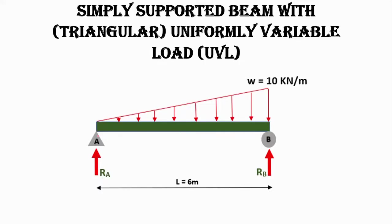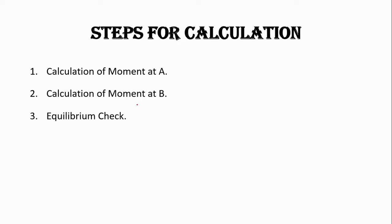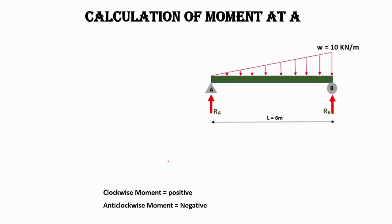Here you can see we have a beam AB of 6 meter length and 10 kilonewton per meter UVL acting on it. First we will calculate the moment at point A, then moment at point B, then perform the equilibrium check, and at the end we will draw the free body diagram, shear force diagram, and bending moment diagram with the help of equations.